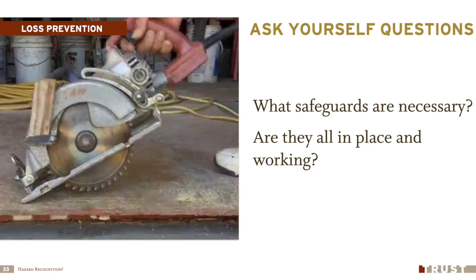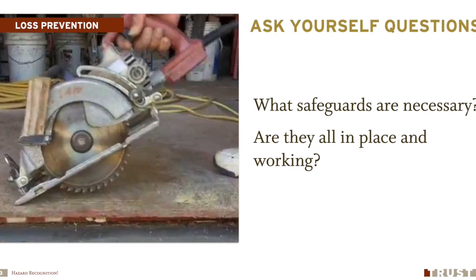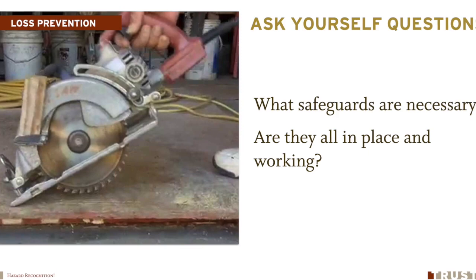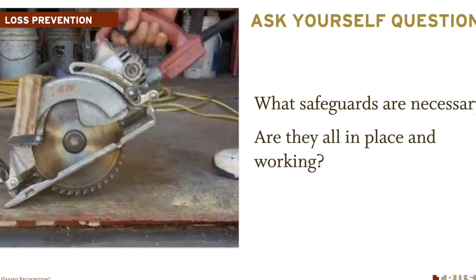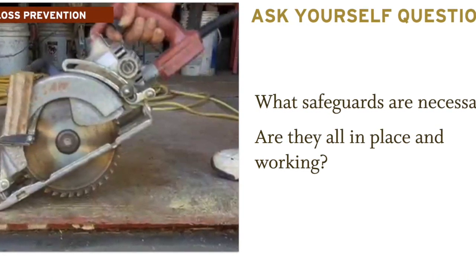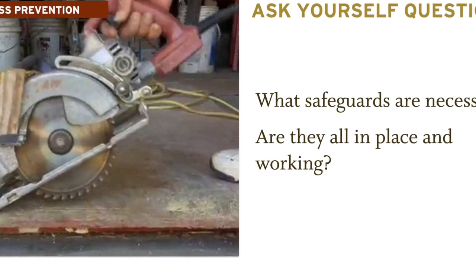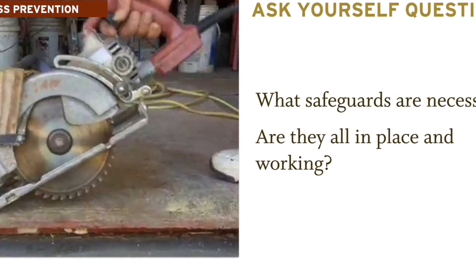What safeguards are necessary? I'm using a circular saw — and you can see that the blade guard has been jammed in place with a wedge of wood to ensure the guard wouldn't return. What happens if I forget that and set it down on the ground, or brush it against my leg? Those safeguards are necessary. Look for the guards. What safeguards are necessary, and are they in place and working? That's an essential part of this.